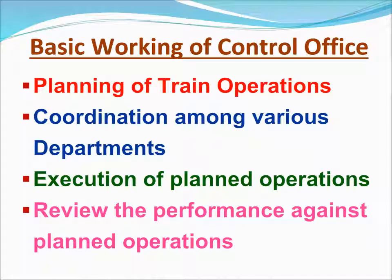The basic working of the control office involves four key aspects: planning of train operations; coordination among various departments; execution of planned operations; and review of performance against planned operations.